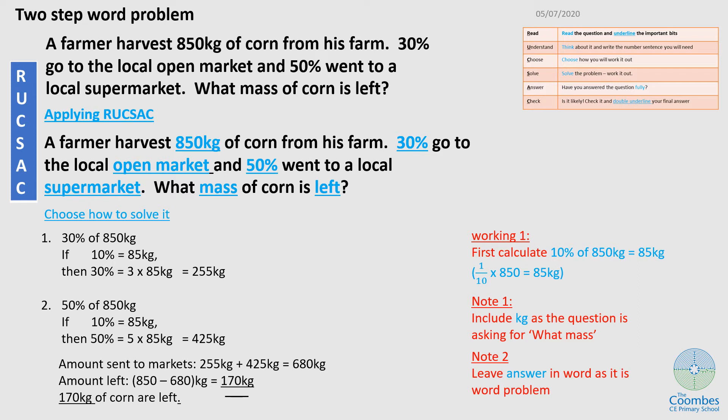And I now have to choose how to work it out. Now to do this, if you come with me to my working, first, I will calculate 10% of the amount. So 10% of 850 is just one tenth of 850. And that's 85 kg. So I know 10% is 85 kg. So knowing that, 30% is 85 kg times 3. And that gives me 255 kg.